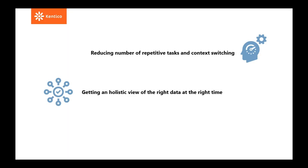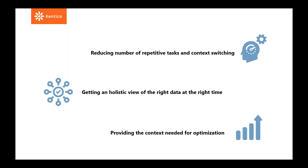The second problem we are addressing with version 10 is getting a holistic view of the right data at the right time. We live in an era of data abundance, and it is common that marketers have to go to different places, collect data, put it in one heap, and then maybe get a holistic view. The third problem we decided to tackle is providing the context needed for optimization — because in order to optimize the digital experience of your customers, you need to know at what step of the journey they are most engaged and also at what step your customers are leaving you, so you can fix your leaking funnels.